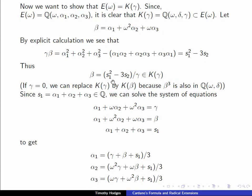So β is (s₁² - 3s₂)/γ and it belongs to K(γ). Of course, this assumes that γ is not 0. In the case where γ is 0, we need to replace K(γ) by K(β) and continue the argument in that way. And again, β³ by a very analogous calculation to what we did in the previous page is in ℚ(ω,δ). It's in K.